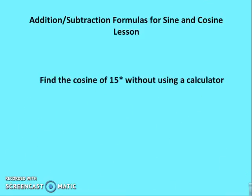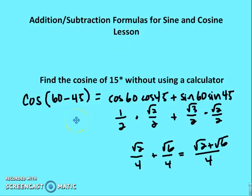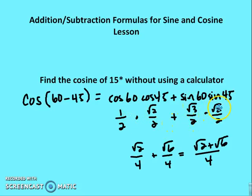Now let's go back to finding cosine of 15 degrees without a calculator using the cosine angle addition or subtraction formulas. You can do this two ways: cosine of (45° − 30°) or cosine of (60° − 45°). Using cosine (60° − 45°): cosine 60° · cosine 45° + sine 60° · sine 45° = (1/2)(√2/2) + (√3/2)(√2/2) = √2/4 + √6/4, or (√2 + √6)/4.